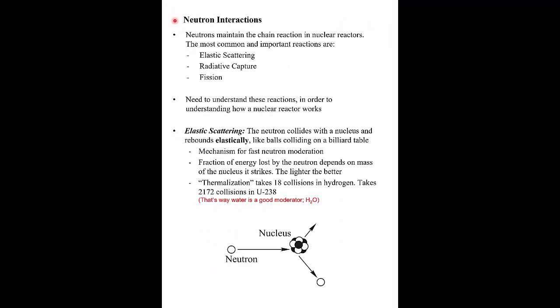To understand how a nuclear reactor works, we need to understand what happens to neutrons in the reactor. It's neutrons that maintain the chain reaction. A U-235 atom fissions and spits out on average 2.4 neutrons, and one of those has to go on to continue the chain reaction by hitting another U-235 atom to split it. In addition to fission, other things can happen to neutrons: elastic scattering, radiative capture, and fission. We need to understand these three things to grasp the basic operating principles of a nuclear reactor.